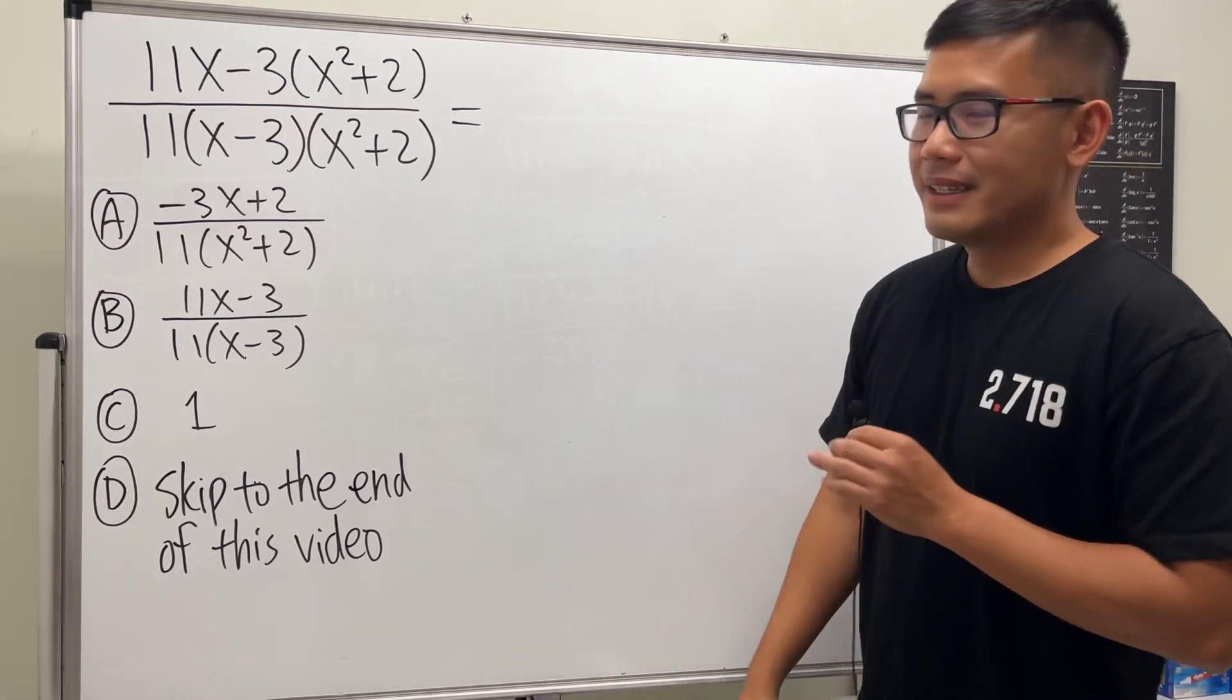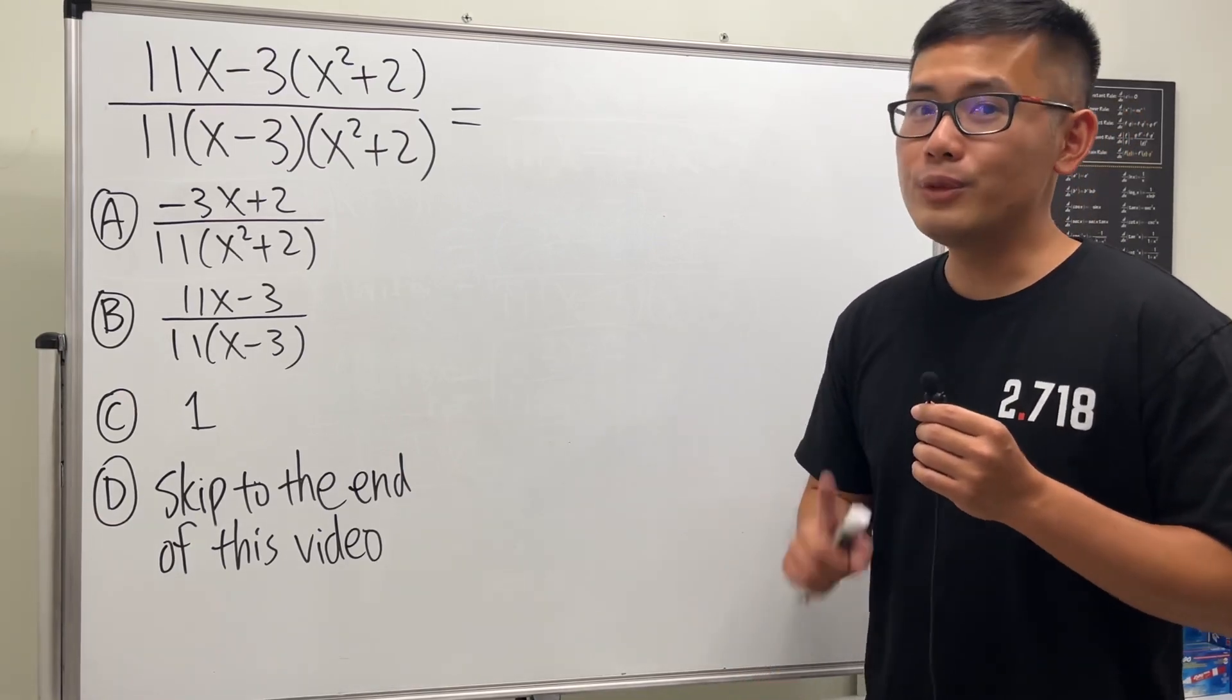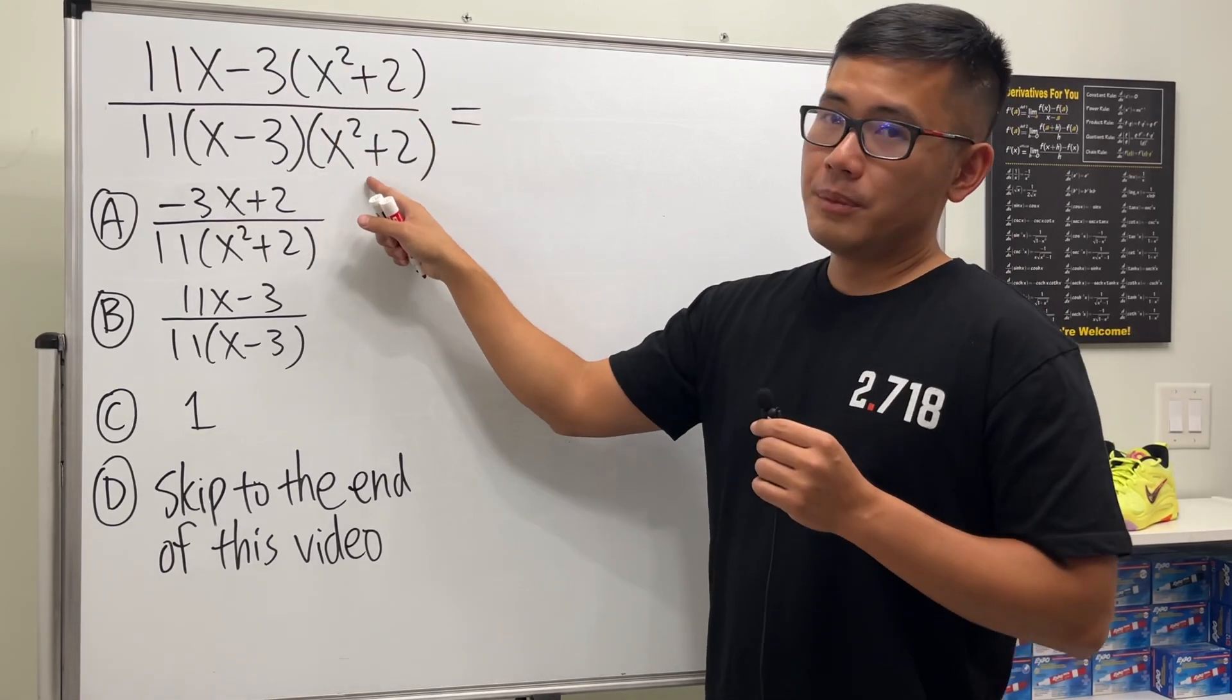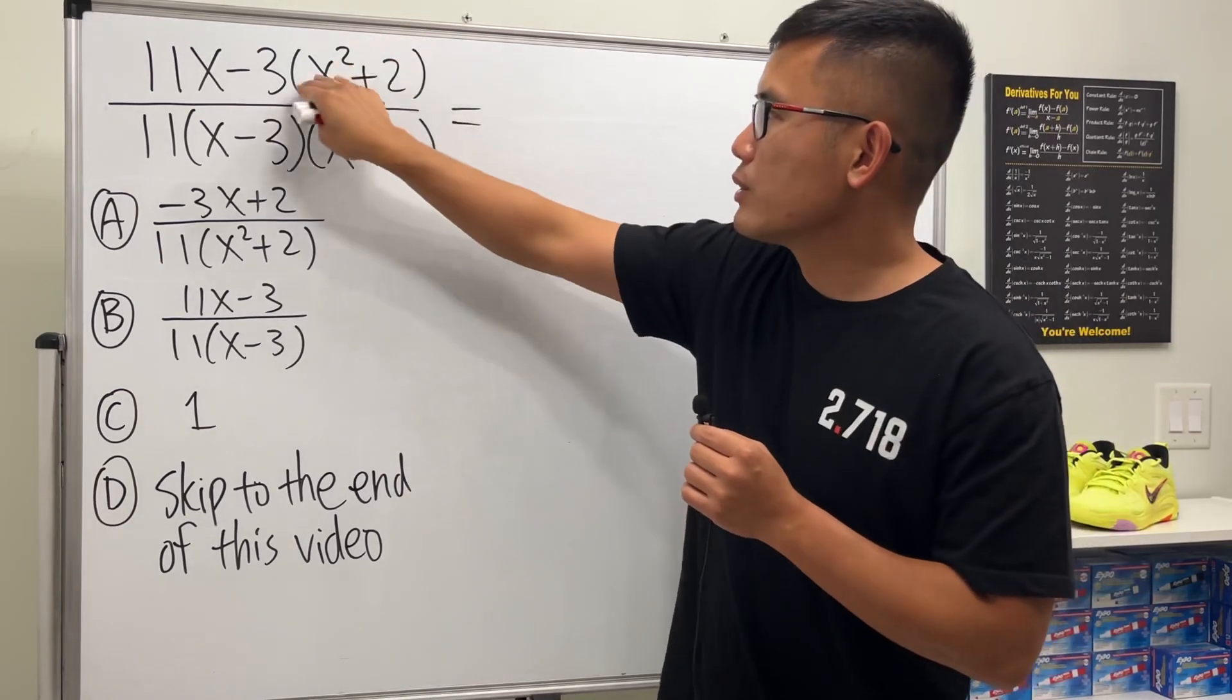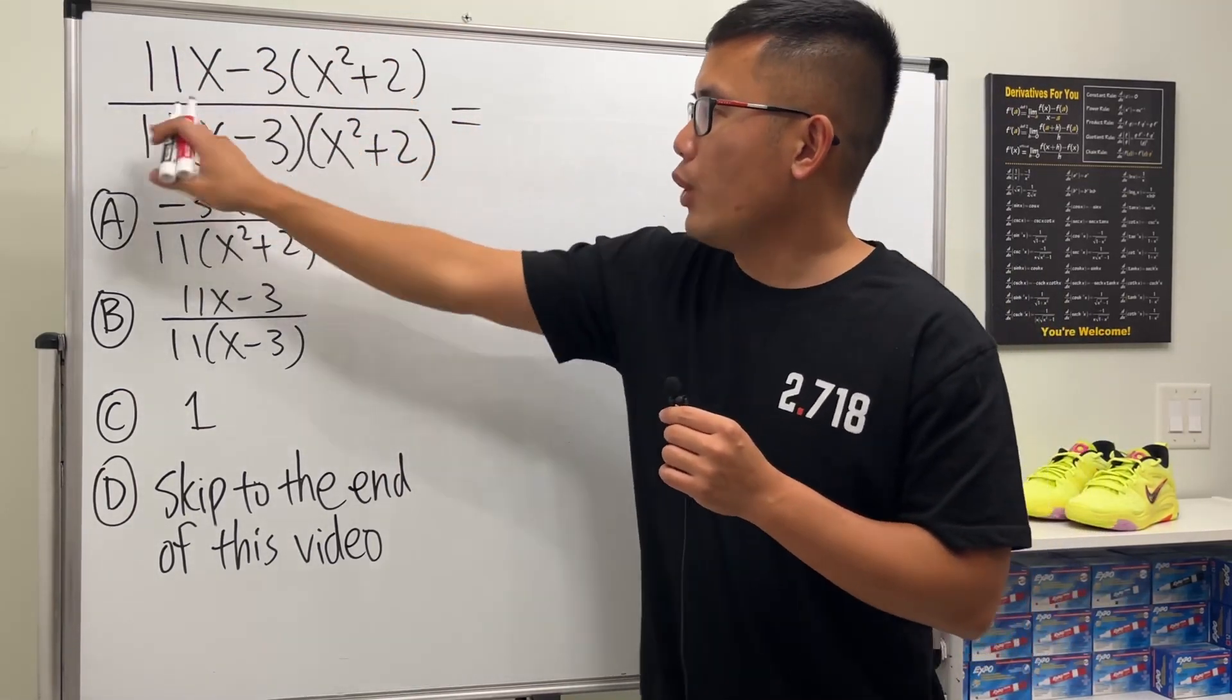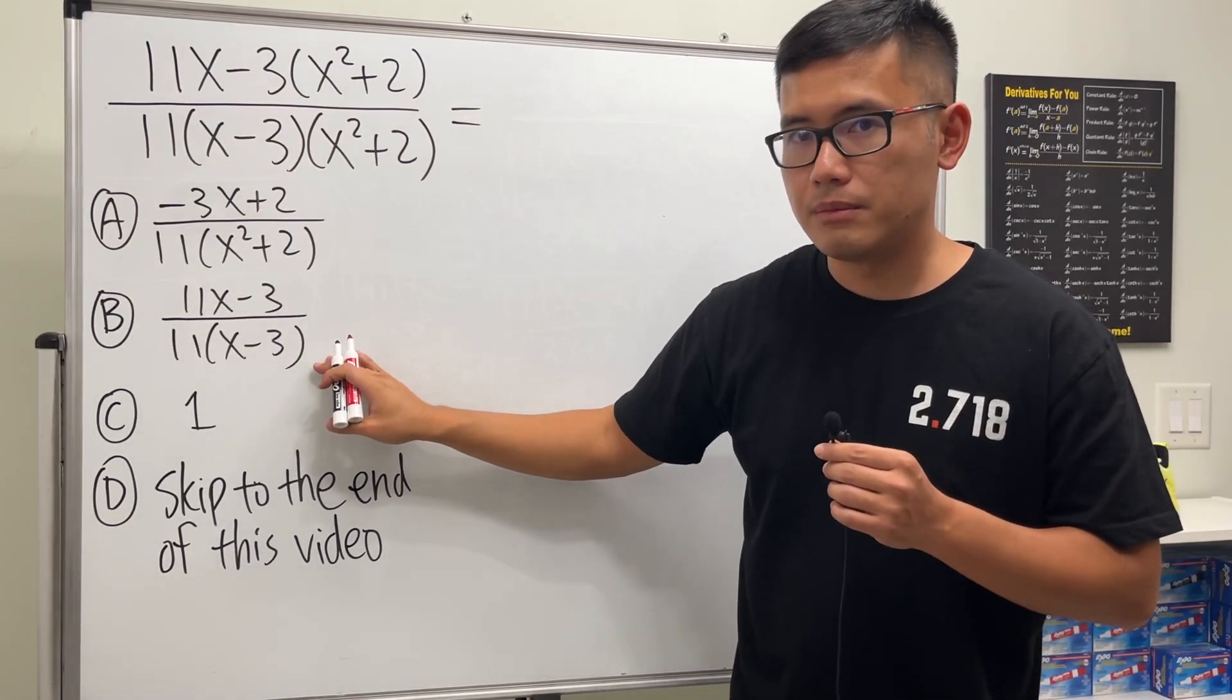Done? Okay cool. All right, I really like this question not only because I came up with this myself, but also notice that we have the x² + 2 being the same here and here. I'm pretty sure a lot of students will just cancel this and cancel that and they will just say the answer is 11x - 3 over 11(x - 3). They'll just put B for the answer but that's not correct.